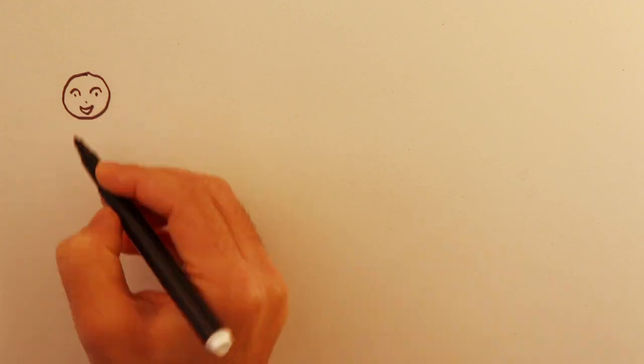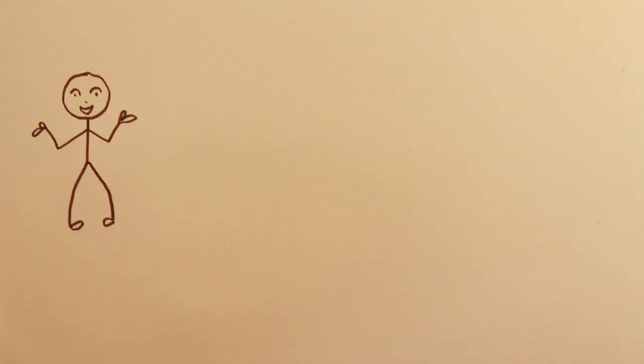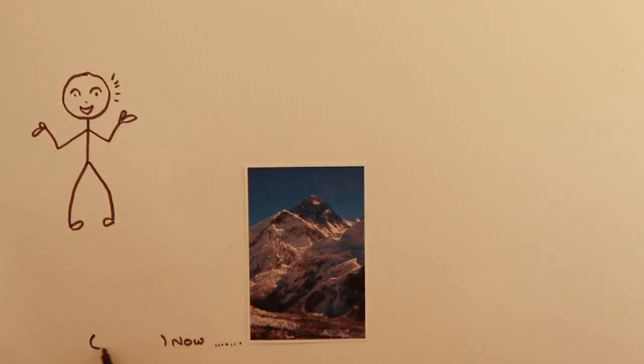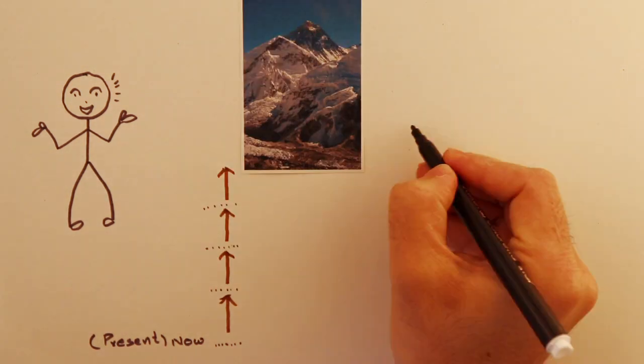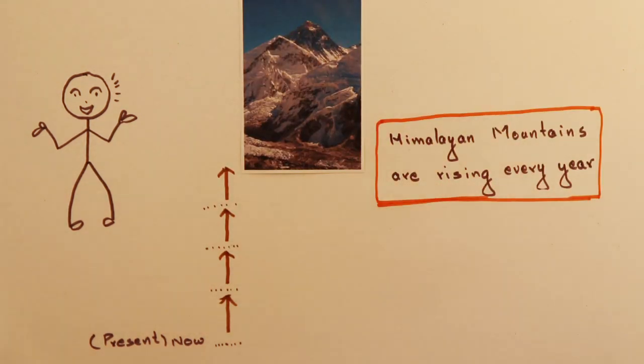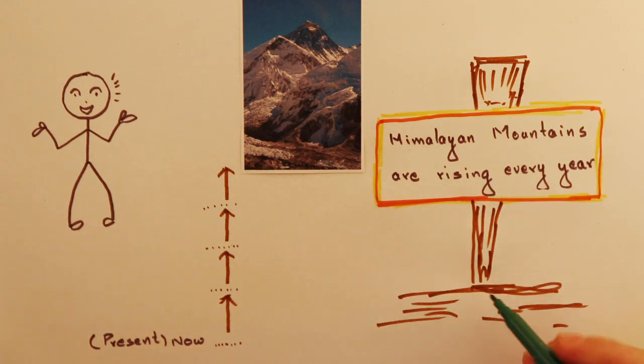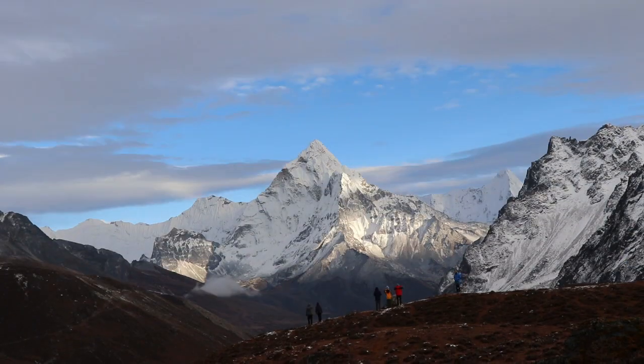Have you ever considered that this number 8848 will not be the fixed height of Mount Everest forever? Yes, the Himalayan mountains are not stable. They are rising up every year. More on that some other time in another video. Thank you for watching.